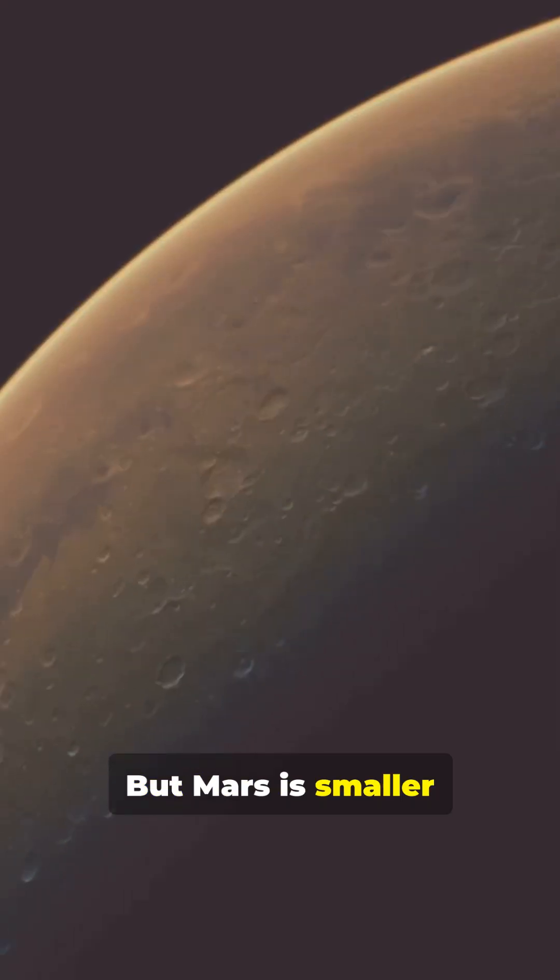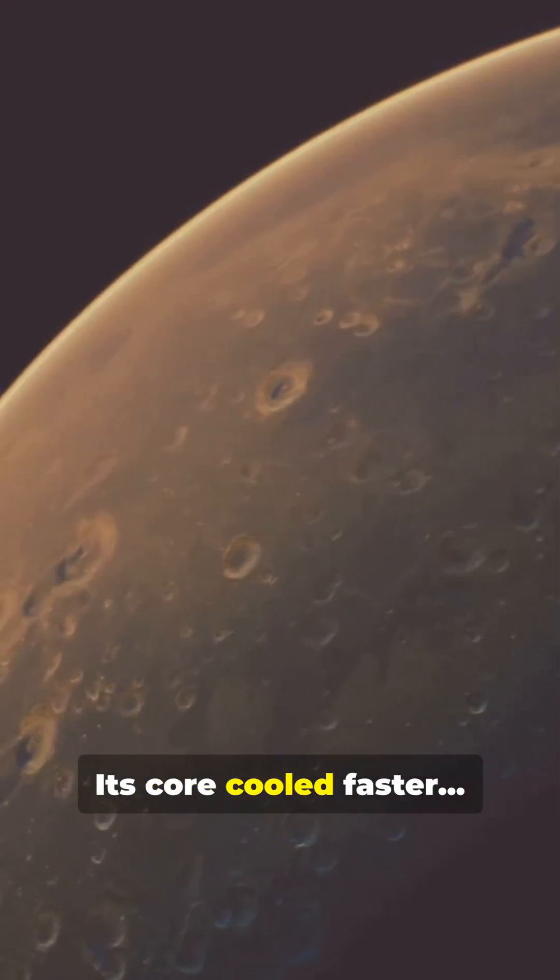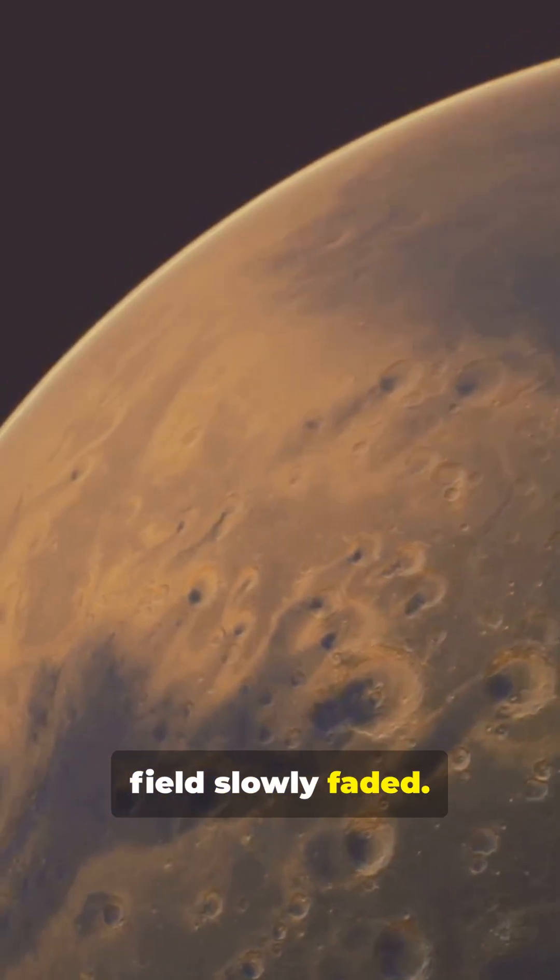But Mars is smaller than Earth. Its core cooled faster, and its magnetic field slowly faded.